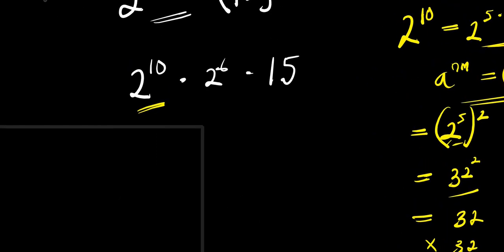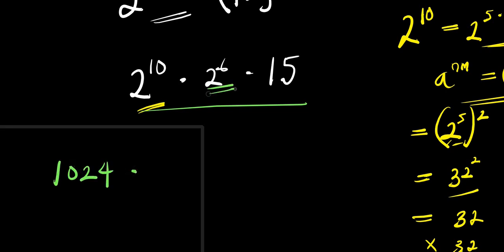So what we are having here is simply 1024. And 2 to the power of 6 — if 2 to the power of 5 is 32, then 2 to the power of 6 will be 32 times 2, that is 64. Times 15.